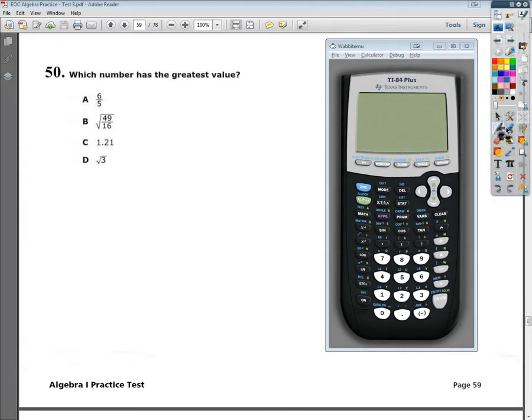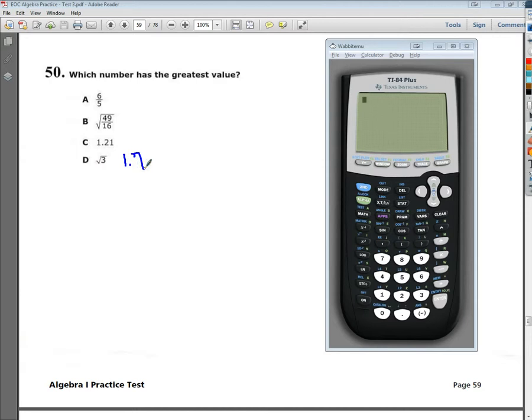What I should mention is that some of these easily reduce down. Like the square root of 3, I know, is something around 1.7 something.